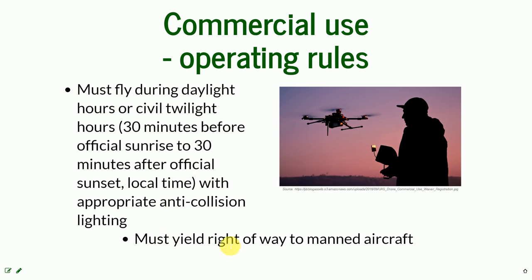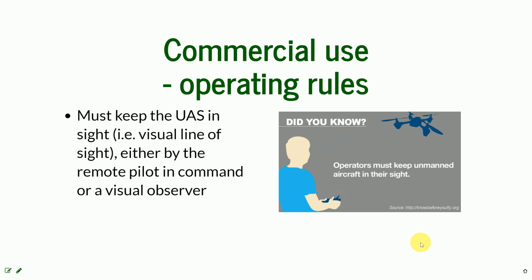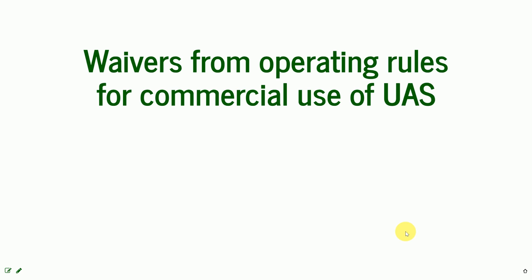You must always yield right of way to a manned aircraft. It's pretty obvious that manned aircraft always have priority over UAS — just get out of the way. The operator must keep the UAS within visual line of sight, and this must be maintained by the remote pilot or by a visual observer. You cannot fly intentionally over people. These rules apply to all commercial users.